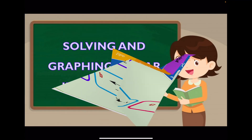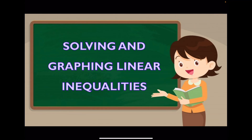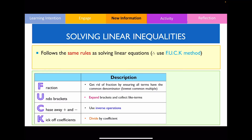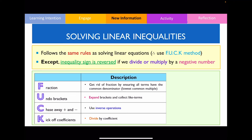The last thing I want to go through is how to solve and graph linear inequalities. When solving linear inequalities, we use the exact same rules as solving linear equations. However, there's one fundamental difference: the inequality sign will get reversed whenever we divide or multiply both sides of the equation by a negative number. So a less than sign gets flipped to greater than, and greater than or equal to flips to less than or equal to.